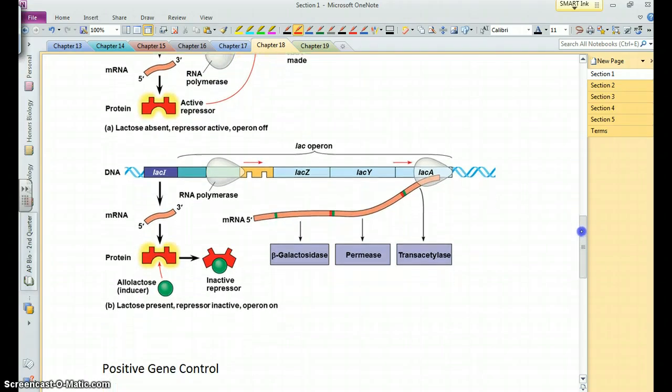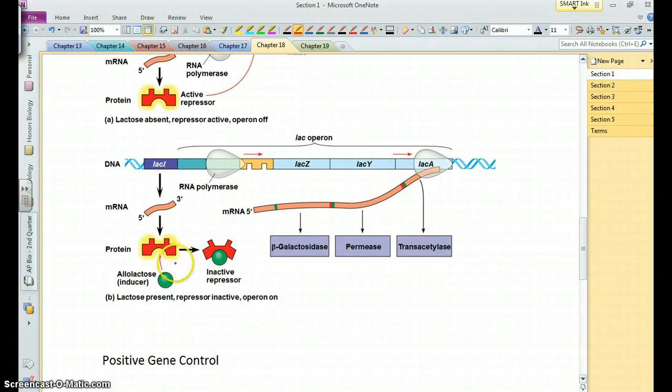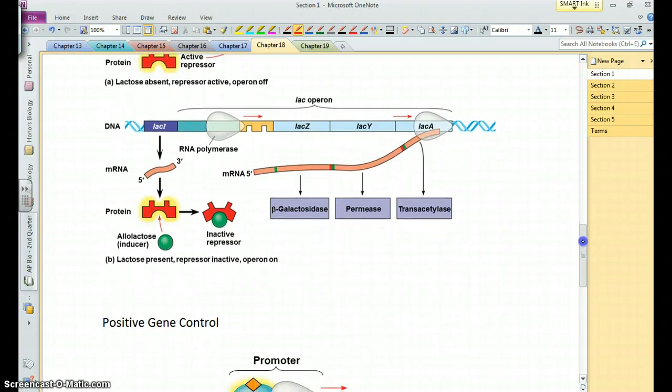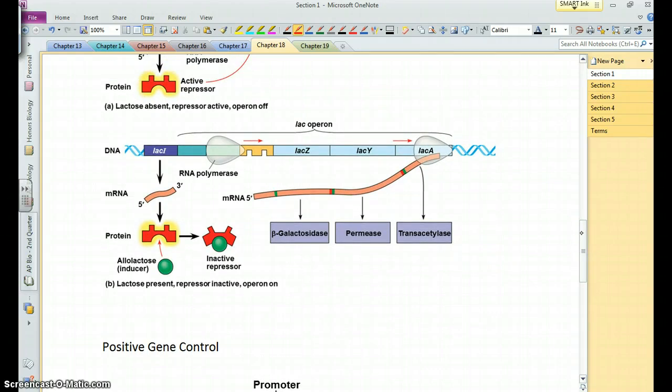However, the presence of lactose, or a version of lactose in this case, will inactivate the repressor, and thus the genes will be transcribed, and you'll have the necessary enzymes to digest lactose, which makes sense because lactose is present and the cell can make use of it. So lactose, an inducible operon.